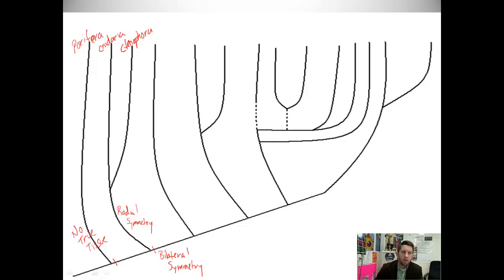Now, at this branch, not only are we dealing with a divergence in symmetry, but we're also dealing with a divergence in embryological development. We're dealing with different tissue levels. The organisms that are radially symmetric are also what we call diploblastic. They are diploblastic. Now, notice this prefix di. That's going to come in to be pretty important. These are diploblastic. These organisms that continue on are triploblastic.